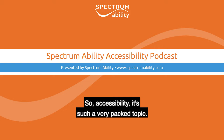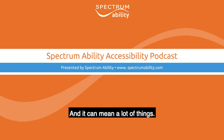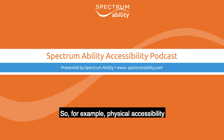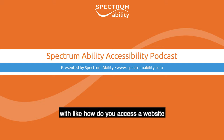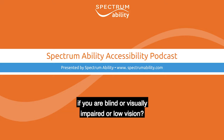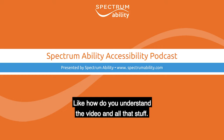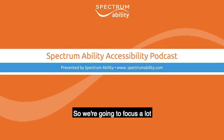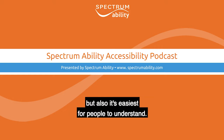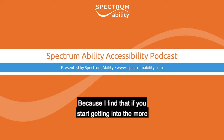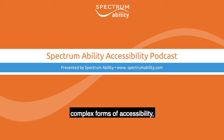Accessibility is a very packed topic and it can mean a lot of things. It can mean physical accessibility — like how you get into a building, ramps and elevators and all that. And technological accessibility has to do with how you access a website if you are blind or visually impaired, or how you access videos if you're deaf. We're going to focus a lot on physical accessibility because that's what Spectrum Ability does, and it's easiest for people to understand.